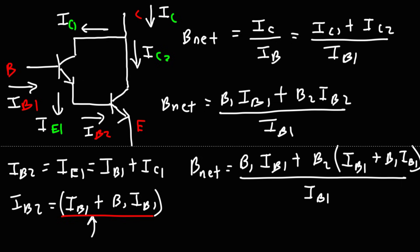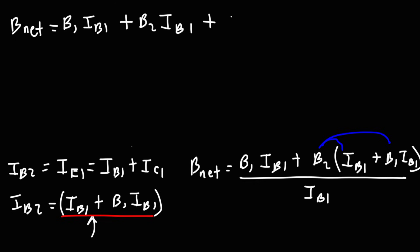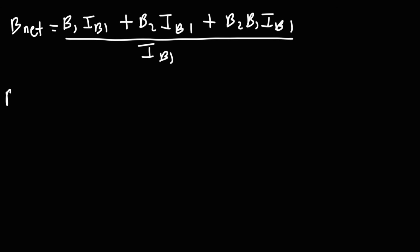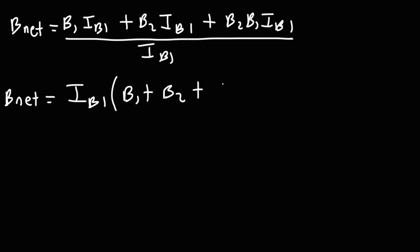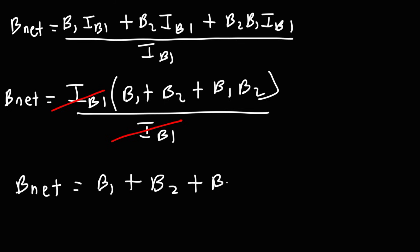Distributing beta2 gives us: beta1·IB1 plus beta2·IB1 plus beta2·beta1·IB1, all divided by IB1. Factoring out IB1 from the numerator, we get beta1 plus beta2 plus beta1·beta2, divided by IB1 — and then the IB1 terms cancel. So the net beta for the Darlington pair transistor is beta1 plus beta2 plus beta1 times beta2. That's how we derive this formula.